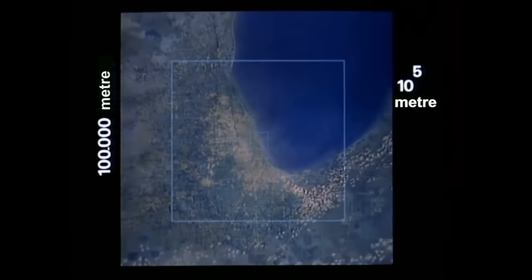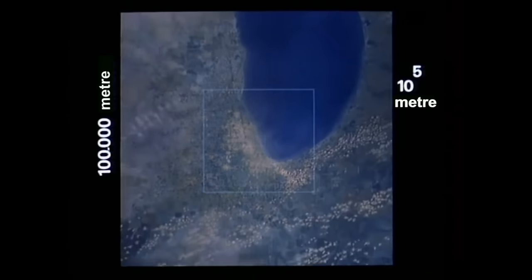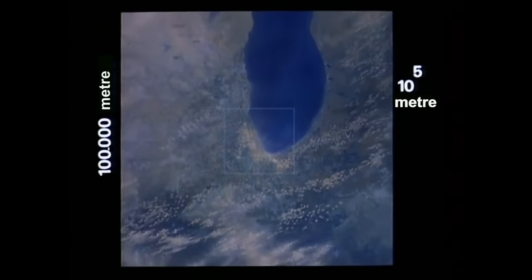Onun beşinci kuvveti. Bir yörünge uydusunun on saniyede geçebileceği kadar bir mesafe. Orta batıda bugünkü hava bulutlu.